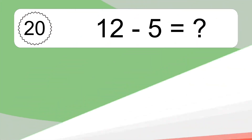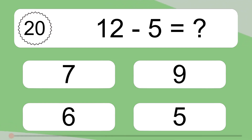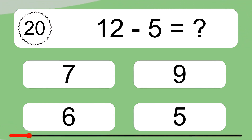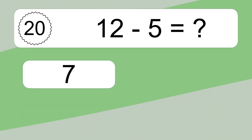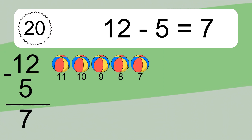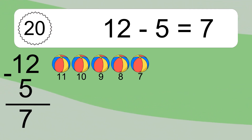12 minus 5 equals what? 12 minus 5 equals 7. Let's count it. 11, 10, 9, 8, 7.